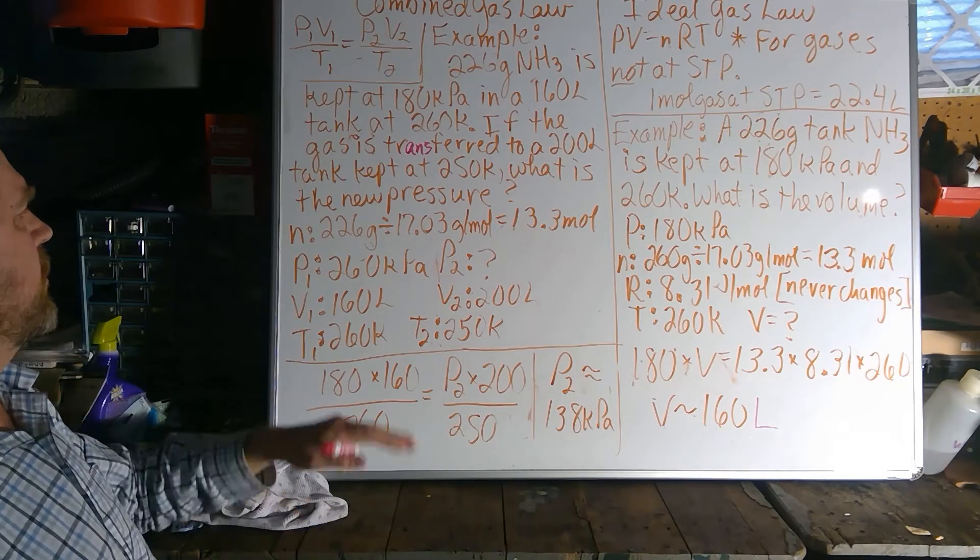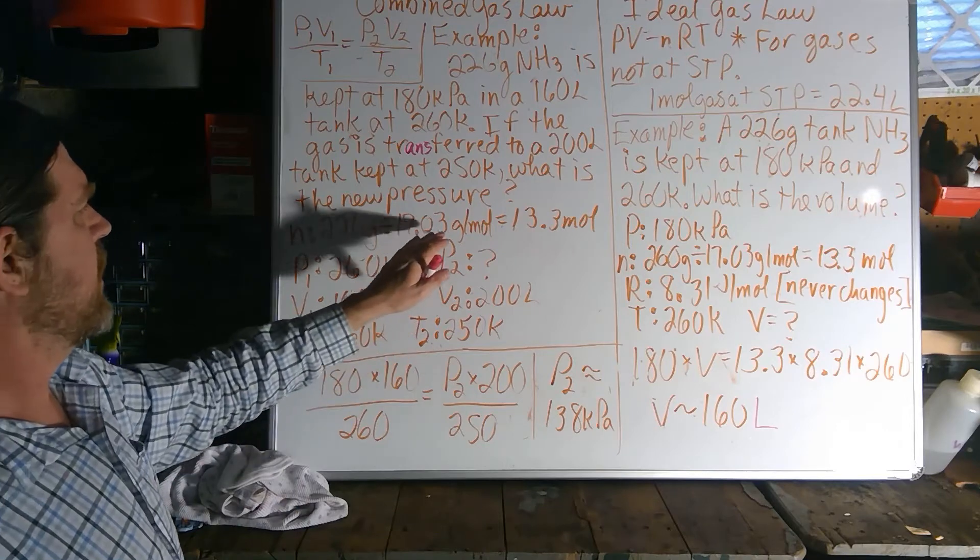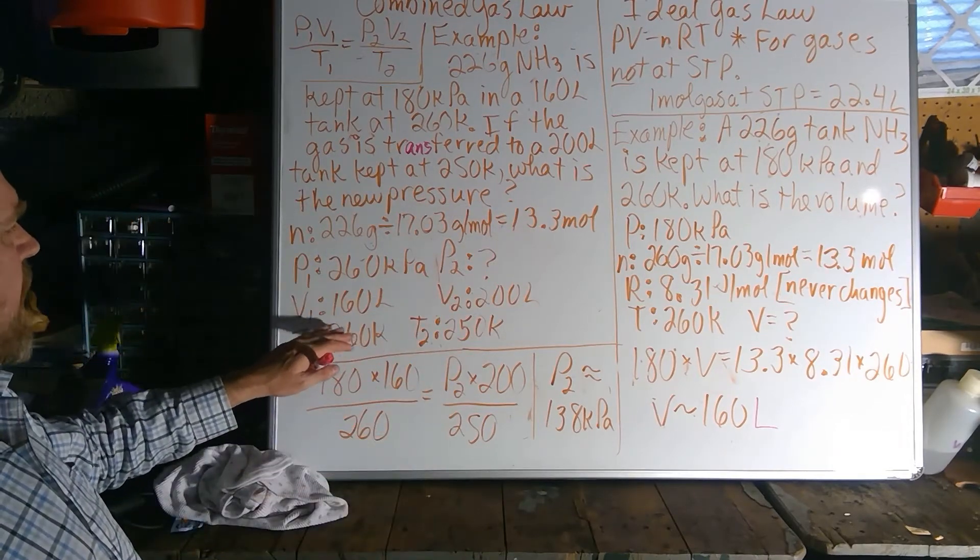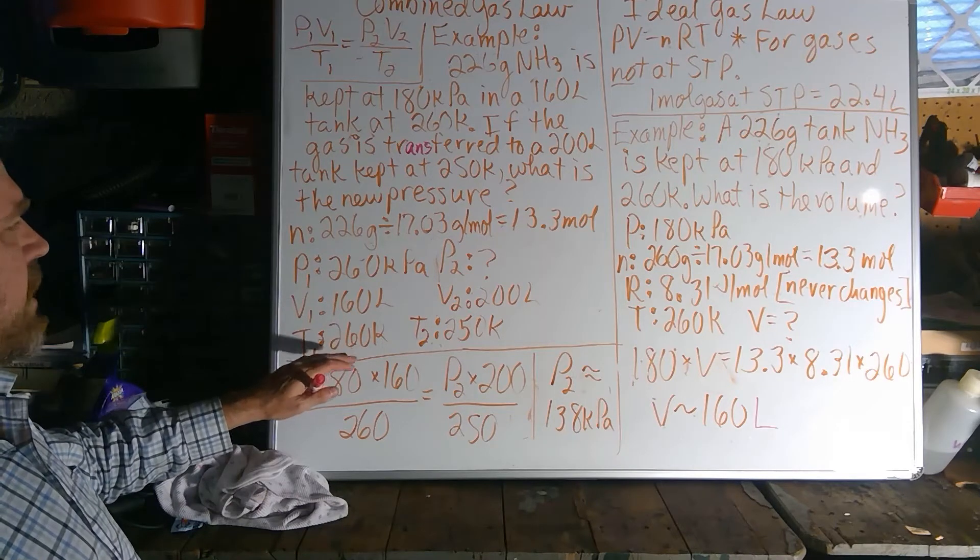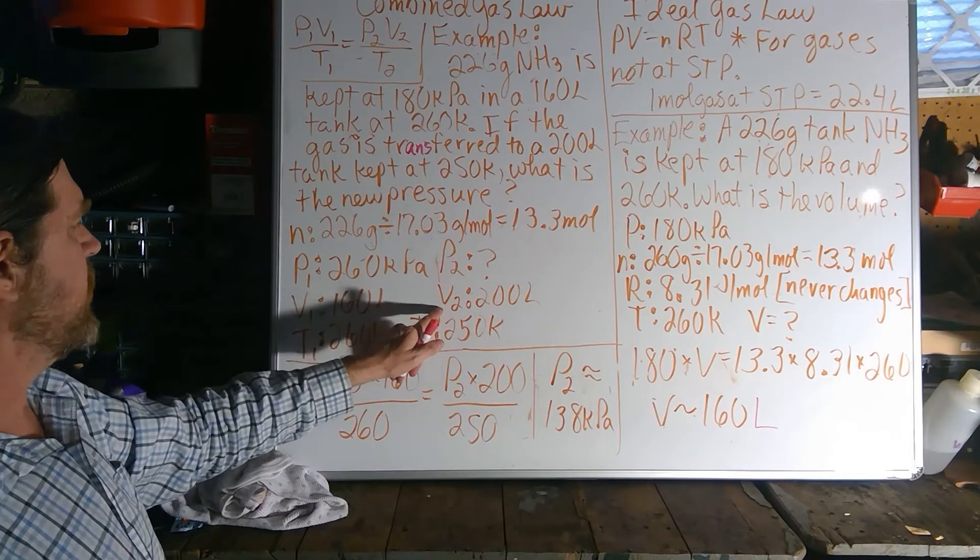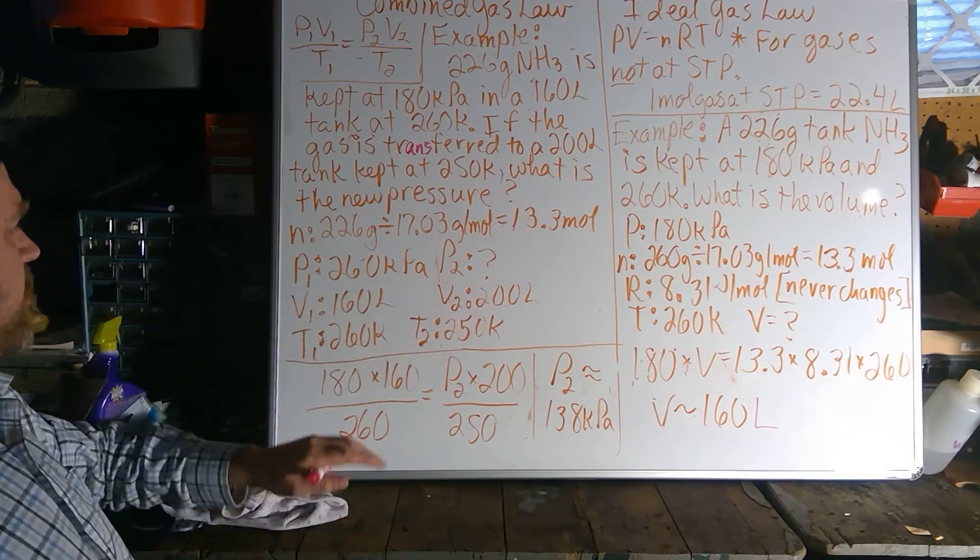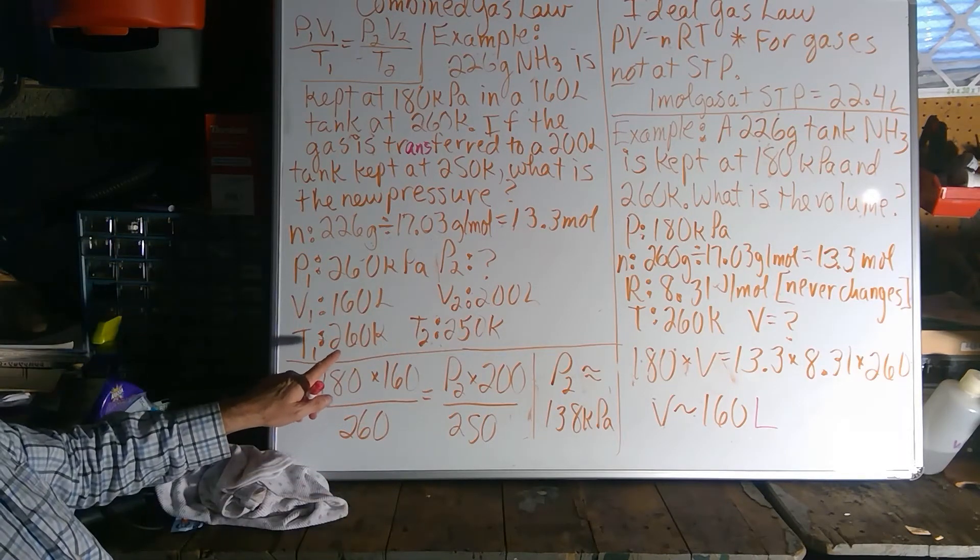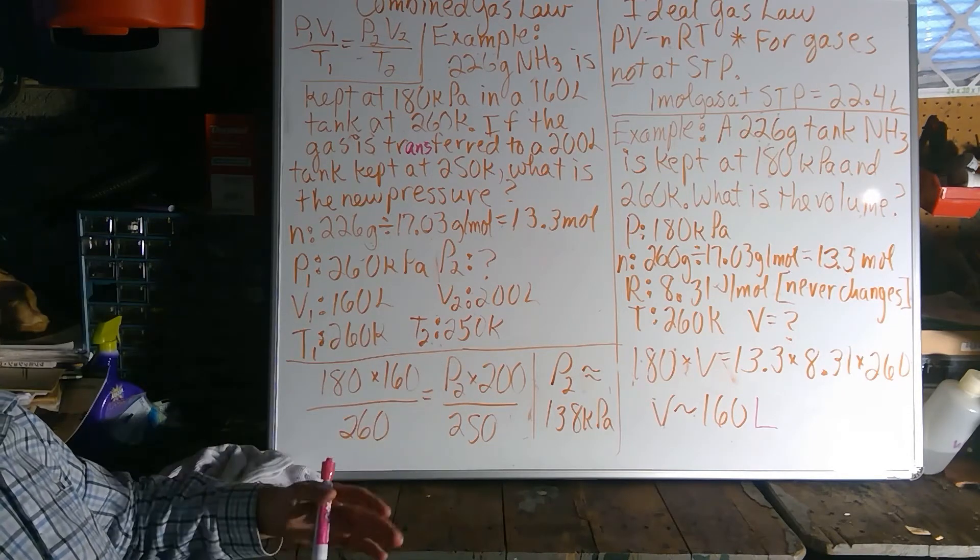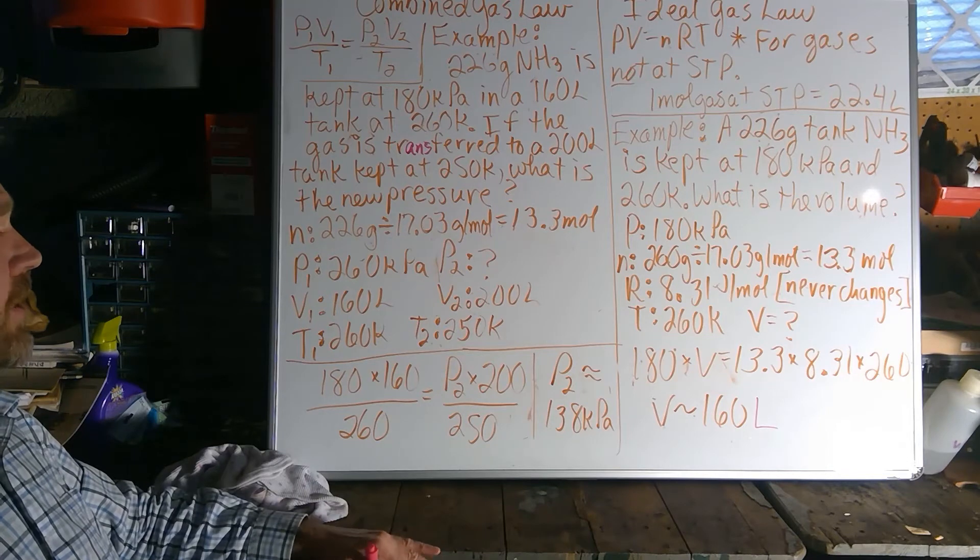So once again, 226 grams is 13.3 moles, and the states that we had here on pressure, volume, and temperature are the same initially. But we are raising the volume from 160 to 200 liters, and we are dropping the temperature from 260 to 250. So probably we're going to have a change in pressure.